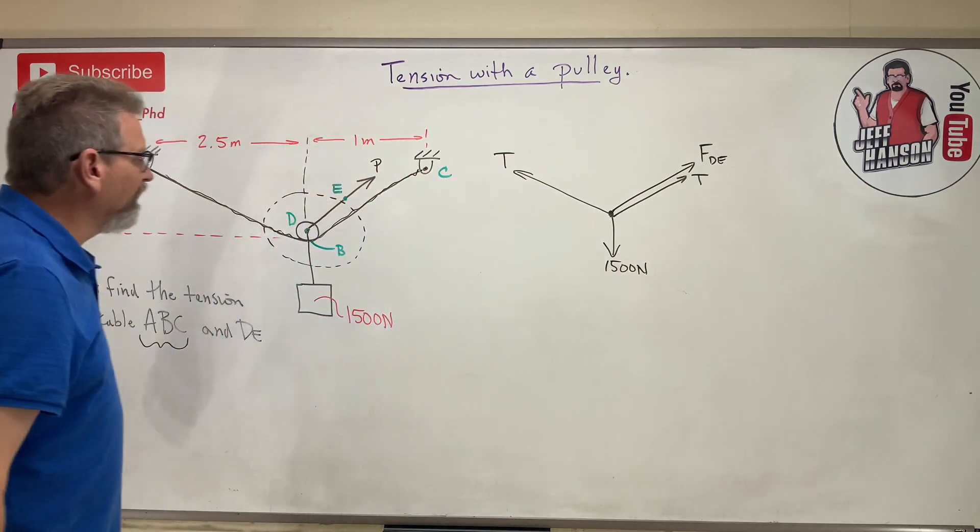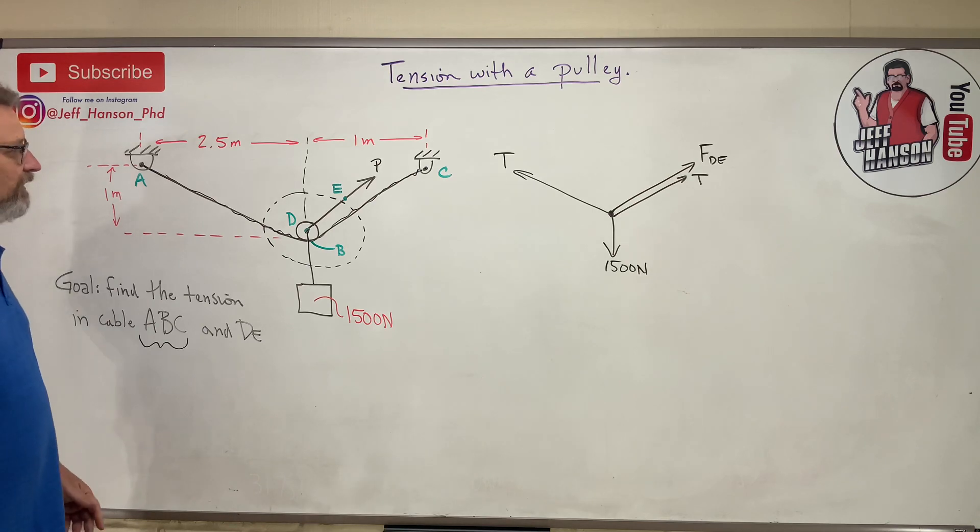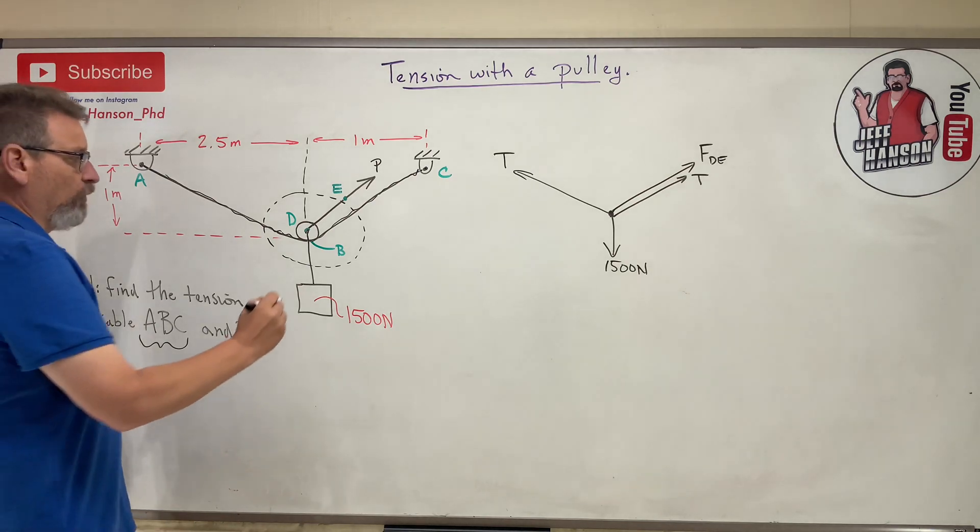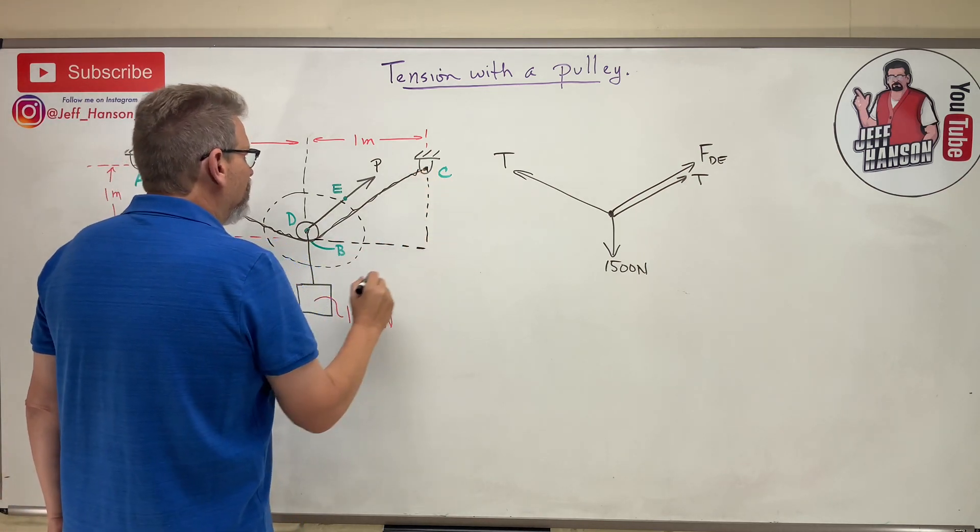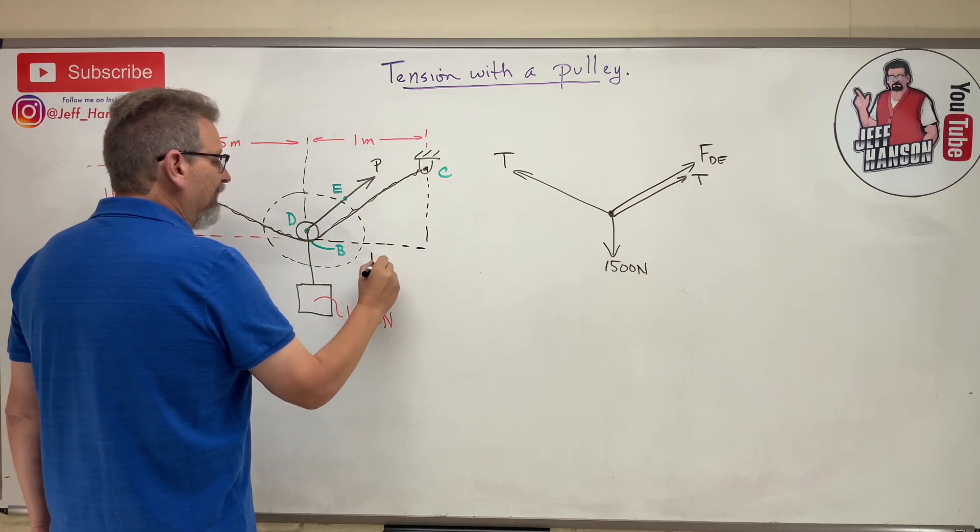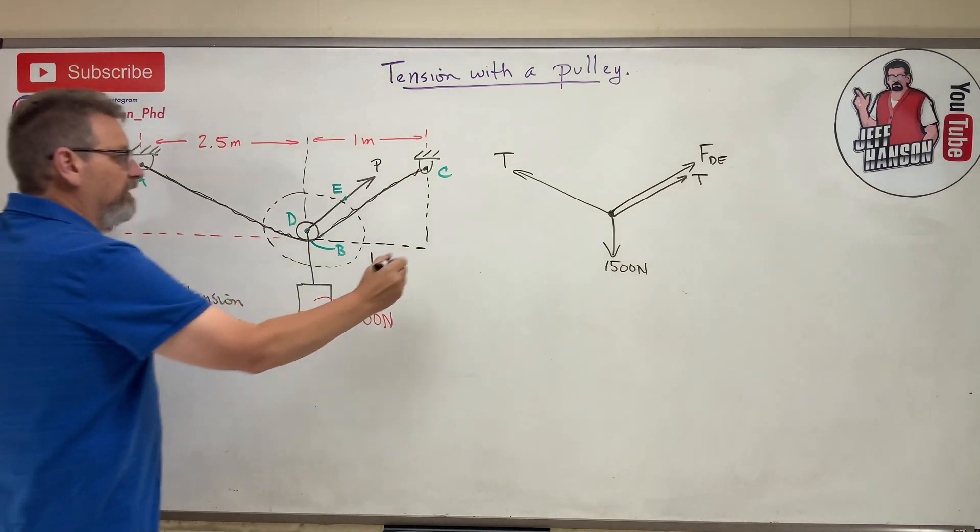So the only thing we got to do here is notice they didn't give us any angles. But that's okay because we're smarter than the average bear and we're just going to use some of these triangles that they gave us here.